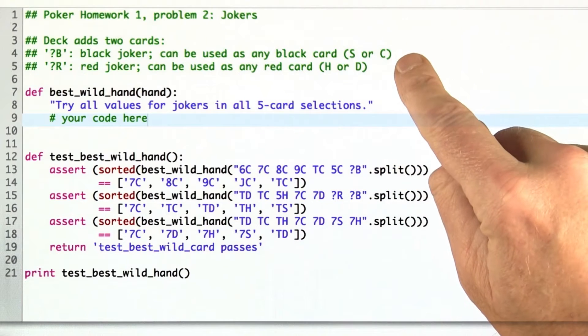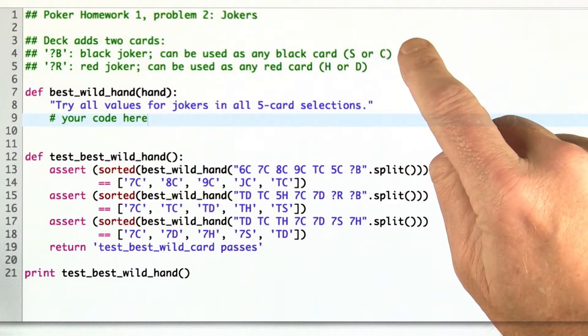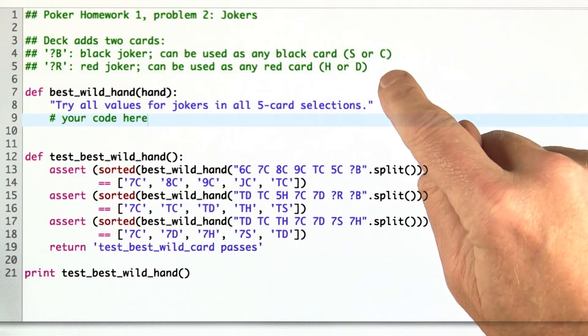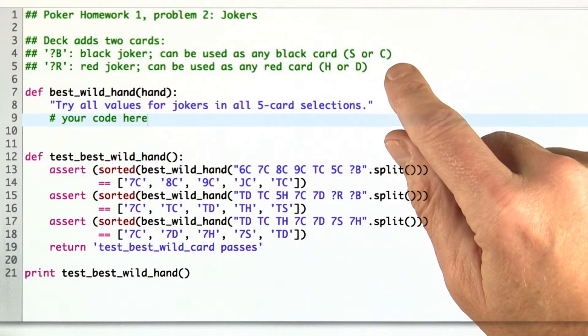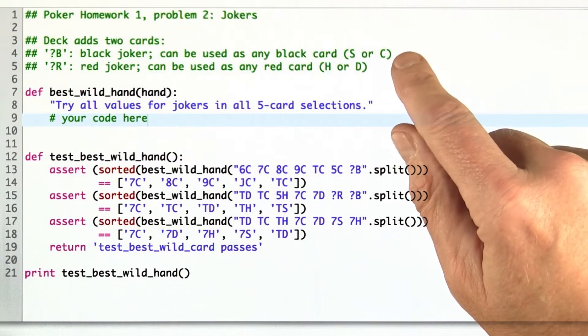In fact, we're going to have two kinds of jokers. There's going to be a black joker and a red joker. The idea is that if you have a joker as one of the cards in your hand, you can replace it with any other card of the same color.